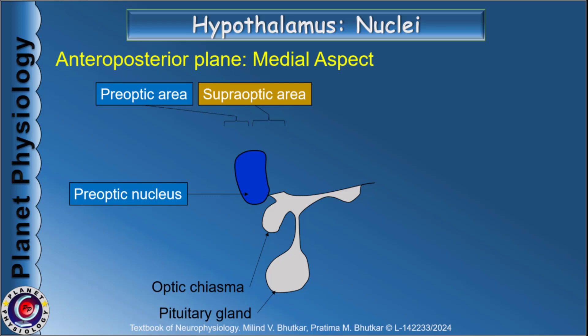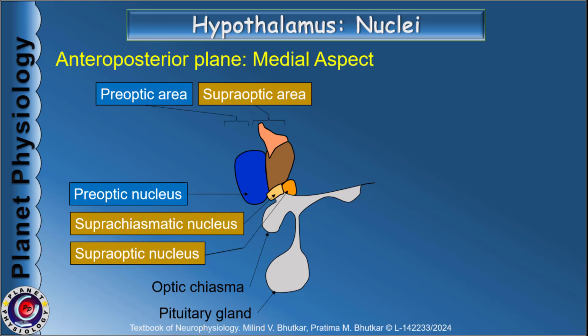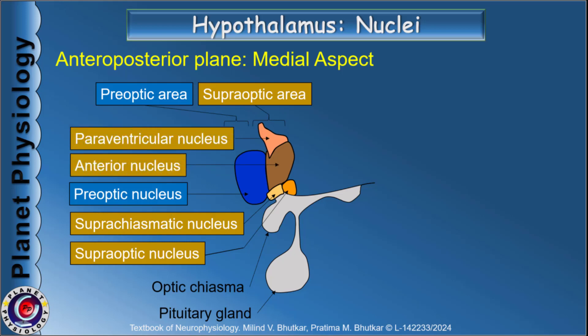Next to the preoptic area is the supraoptic area or anterior group. This group includes four nuclei: supraoptic nucleus, suprachiasmatic nucleus, anterior nucleus, and paraventricular nucleus. The supraoptic and suprachiasmatic nuclei occupy the region superior to the optic chiasma, with the supraoptic nucleus being a bit lateral. Above these two is the anterior nucleus, and on top of the anterior nucleus is the paraventricular nucleus, which lies by the side of the third ventricle.